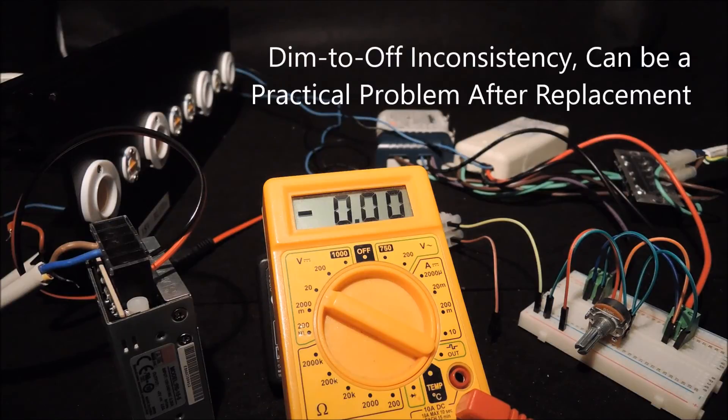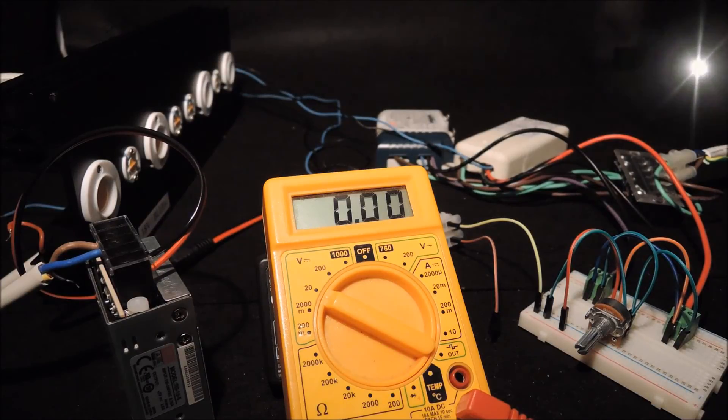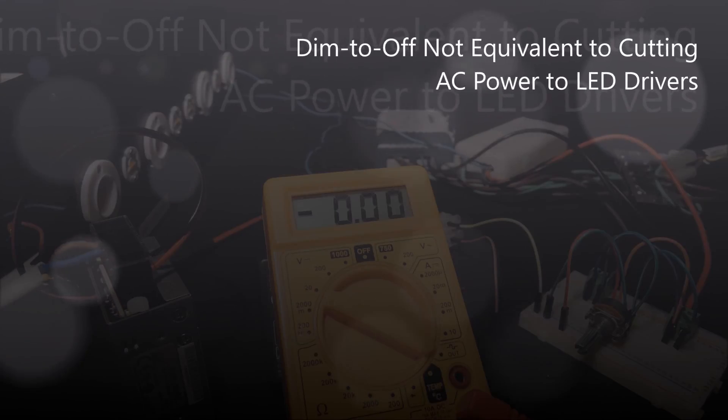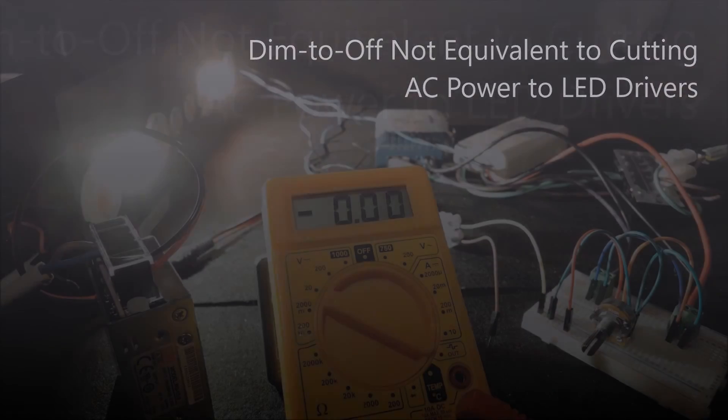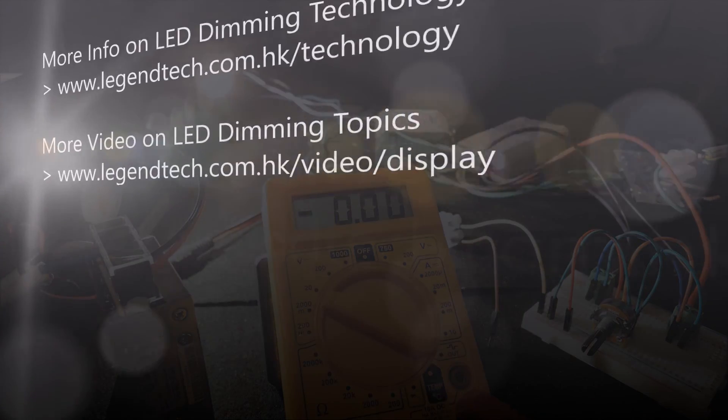Last but not least, we must remind that when there is no light output, the power that connects to the drivers would actually show a non-zero reading. Again, the dim to off feature is not equivalent to actually cutting off the AC power to the driver.